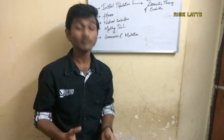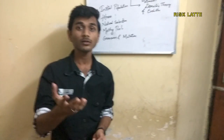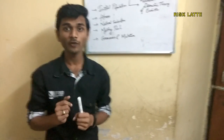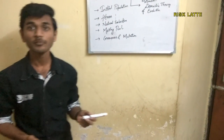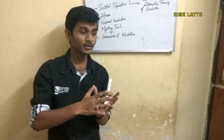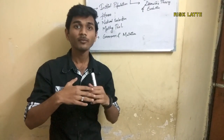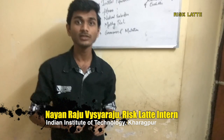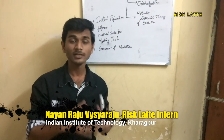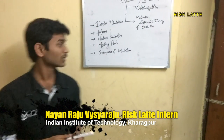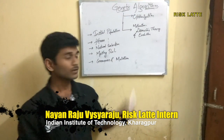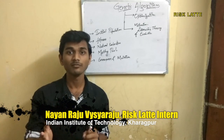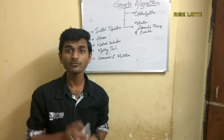Crossover is nothing but similar to reproduction — the characteristics of both parents are inherited by the offspring. Then what is mutation? Mutation is where we get a wide range of solutions. In mutation, a random behavior is picked up and changed randomly so that we get a wide range of solutions.